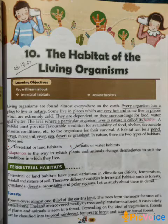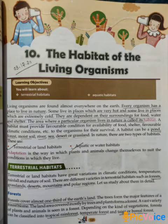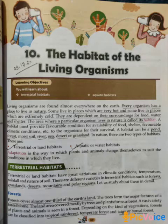Every organism has a place to live in nature. Some live in places which are very hot, such as deserts, and some live in places which are extremely cold, such as polar regions. They are dependent on their surroundings for food, water and shelter. The area where a particular organism lives in nature is called its habitat.